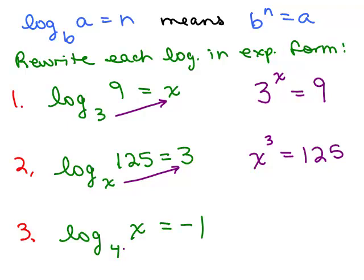And the last one, again, you write the base, that's the little number down here: 4 to the negative 1 equals x. So if you're going to solve this, you would just rewrite 4 to the negative 1 as 1 fourth, and that would be the answer. All I did was ask you to rewrite each in exponential form, but you could have solved for x on all three of these problems.